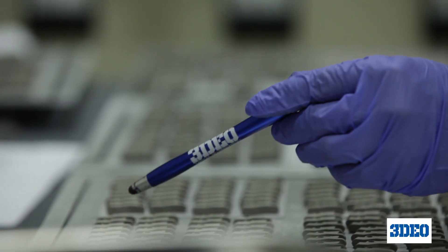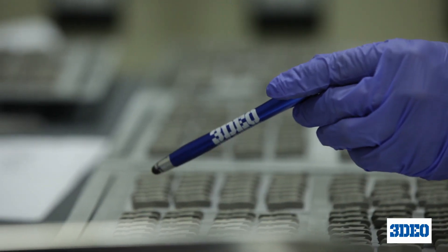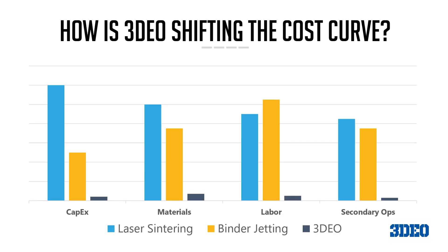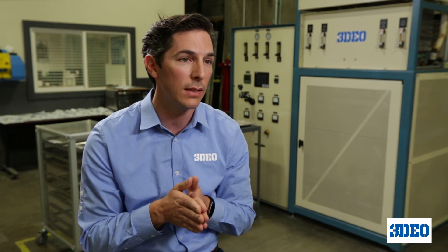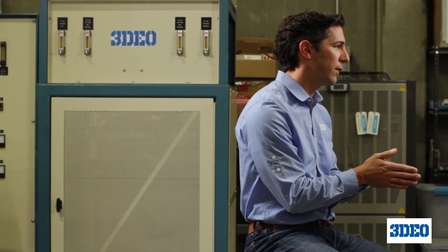That's something exciting about 3DO and our technology, because in every major cost driver — machine cost, material cost, labor cost, and secondary operations — we are driving the cost significantly lower versus competitive technologies. This means for the first time in metal 3D printing we can actually compete directly with conventional manufacturing like CNC machining and metal injection molding.